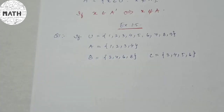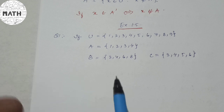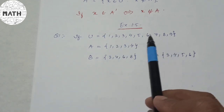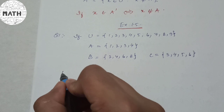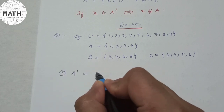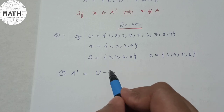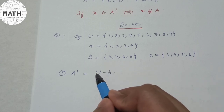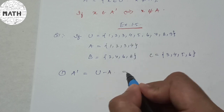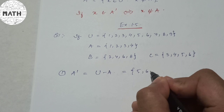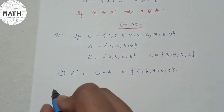Exercise 1.5, Question 1: U = {1, 2, 3, 4, 5, 6, 7, 8, 9}, A = {1, 2, 3, 4}, B = {2, 4, 6, 8}, C = {3, 4, 5, 6}. Find A complement: A' = U minus A, so I remove 1, 2, 3, 4 from U. The answer is {5, 6, 7, 8, 9}.